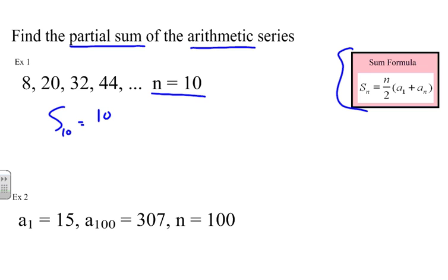Our n value is going to be ten, divide that by two, and now we're going to use our first term, which in this case is eight, and we're going to find now our tenth term. We can try to find our nth term right here. Since we know it's arithmetic, we can see that this is going to be increasing by 12 each time.